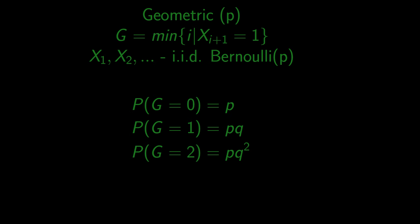We can carry on this logic further and write the general formula for probability of getting any natural number k. It will be equal to probability of 1 success p times the probability of k failures, so q to the power of k.